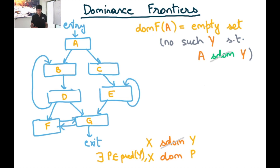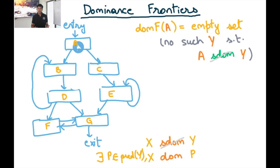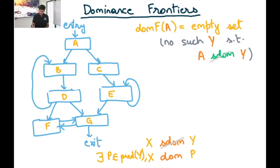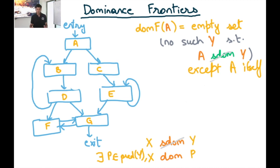Let's see this with an example. I'll use DOMF of some node A to represent the dominance frontier — the set of all nodes in the dominance frontier of A. If I look at the dominance frontier of A, there's only one node not strictly dominated by A, which is A itself, but A has no predecessor that A dominates. So the dominance frontier of A is the empty set.